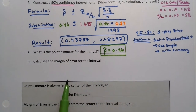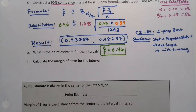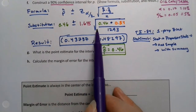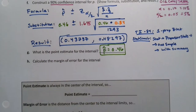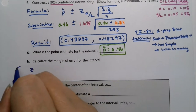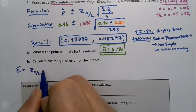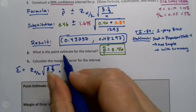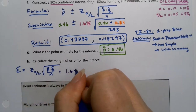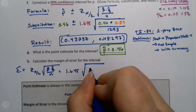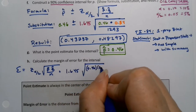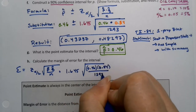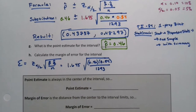Now what was my margin of error? Well, margin of error is this whole back half right here. It's the 1.645 times all of this. The error is Z alpha over two times the square root of P-hat Q-hat over N, which for our purposes was 1.645 times the square root of 0.46 times 0.54 divided by 1,293. That's the real formula for margin of error.